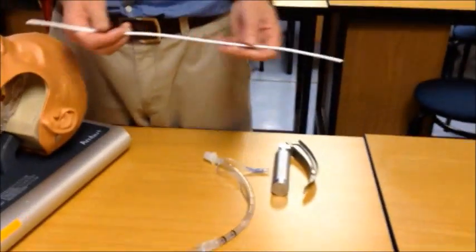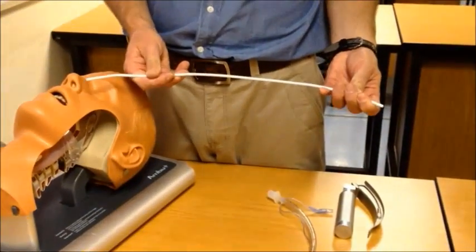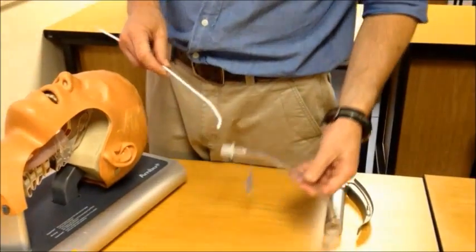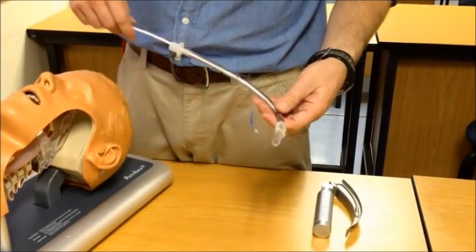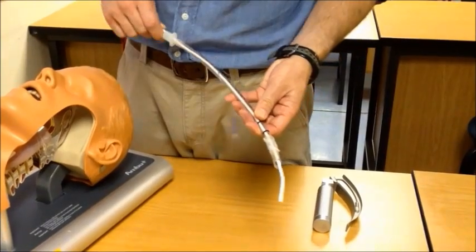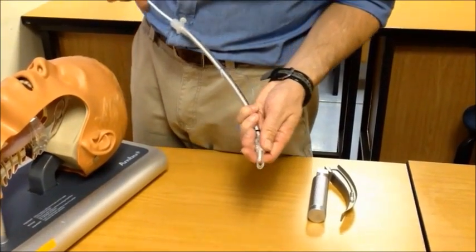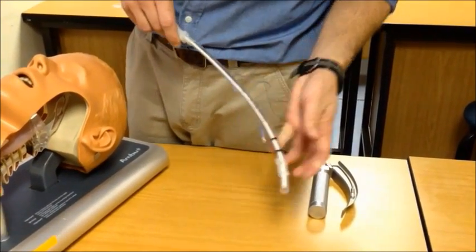If you decide to use a formable introducer or stylet device, take your ET tube, insert it along the ET tube and take care that it should not pass beyond the edge, but rather stop just before the edge of the tube.